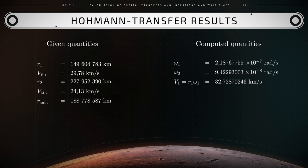The corresponding velocities are the following ones. V1 equals R1 times Omega 1 that equals 32.728 km per second. This is the velocity to escape Earth's gravity.